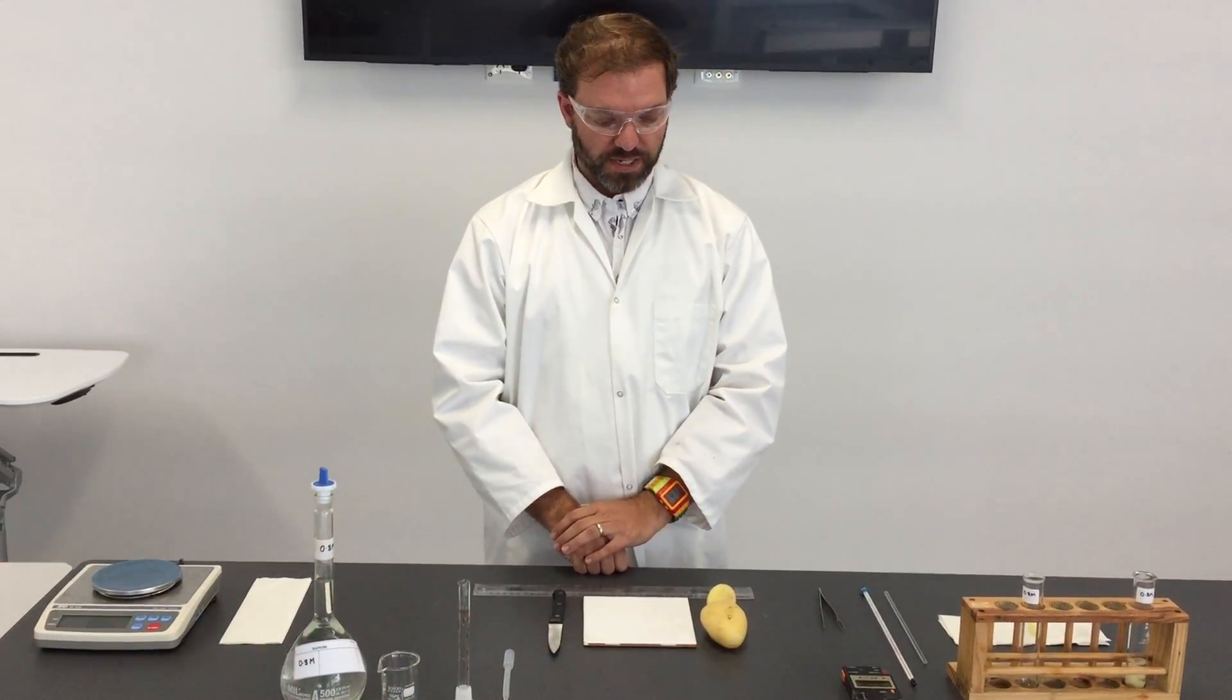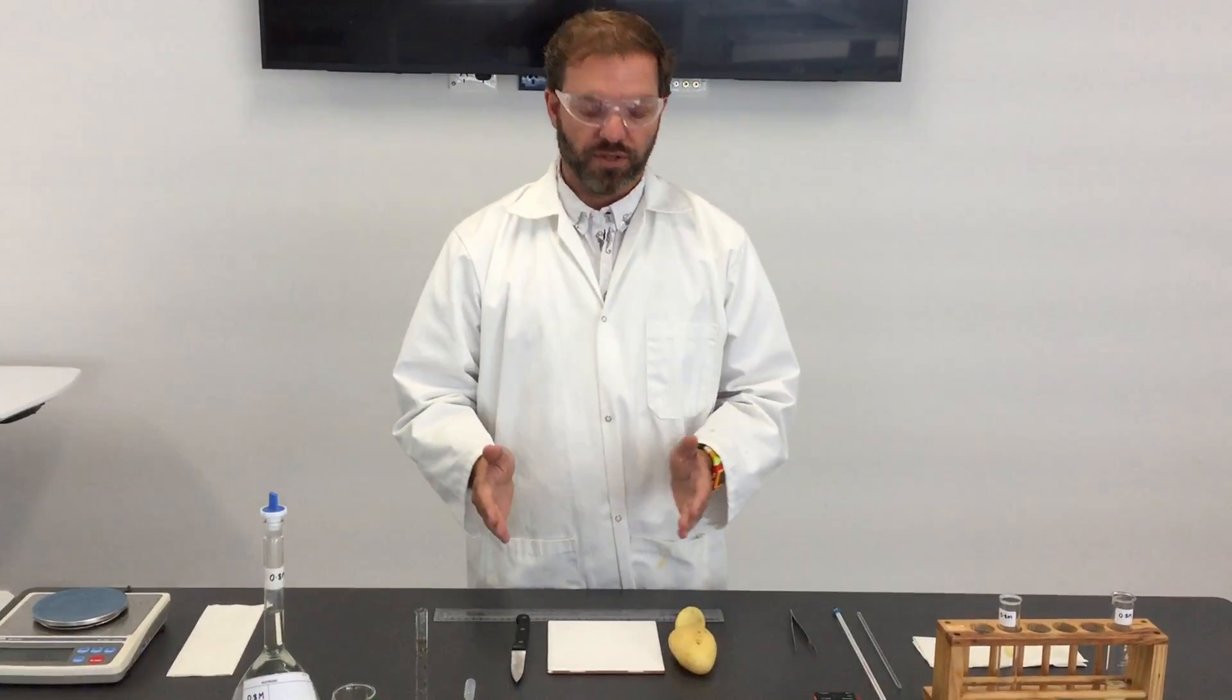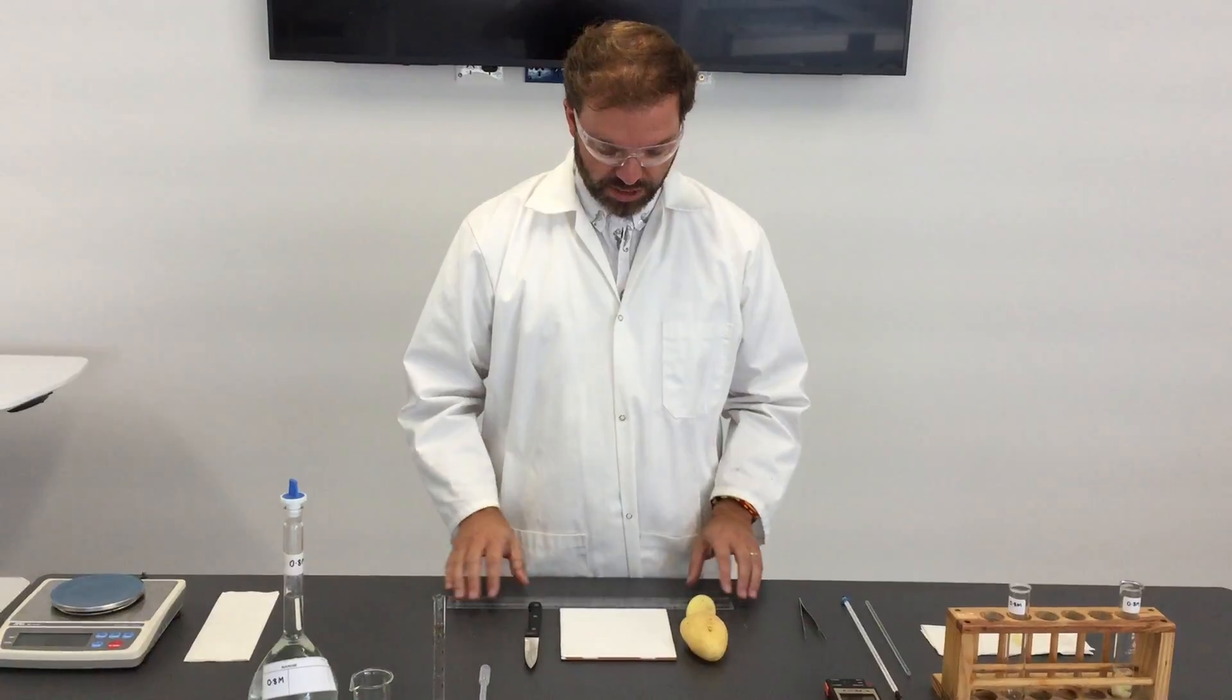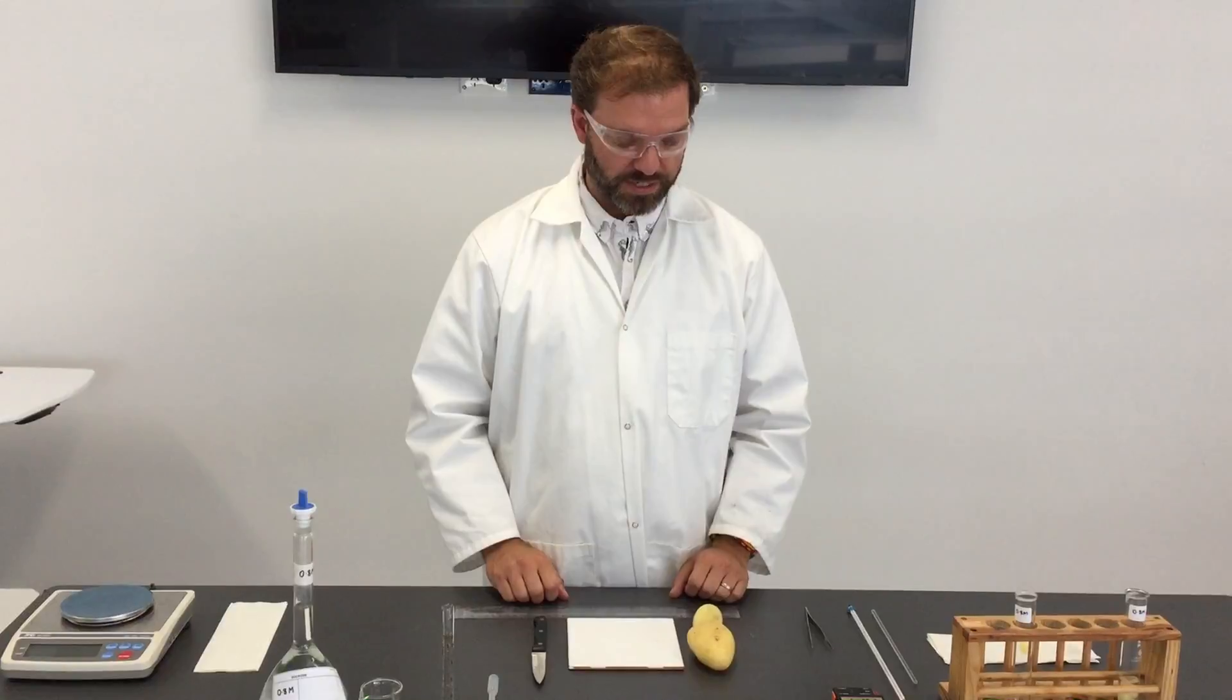So the first thing to do in terms of the practical is to produce even-sized pieces of potato. You can do that using a corer, or in this case I don't have the corer, so instead I'm just using a knife and ruler to measure out one centimeter squares.